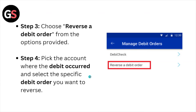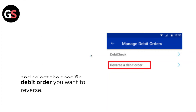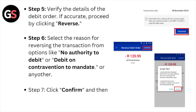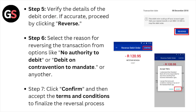Step number four: pick the account where the debit occurred and select the specific debit order you want to reverse. Step number five: verify the details of the debit order, and if accurate, proceed by clicking 'Reverse'.